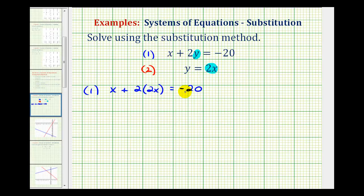So we can now solve this equation to determine the value of x. So we'll have x plus, this would be 4x, equals negative 20. And x plus 4x, or one x plus 4x is 5x.